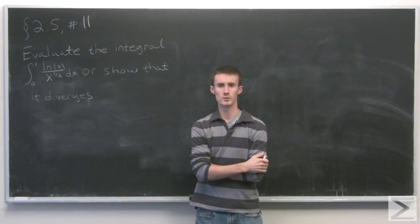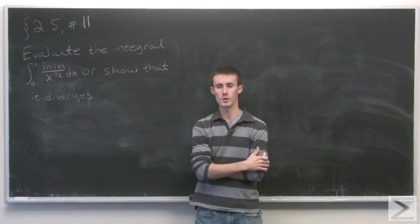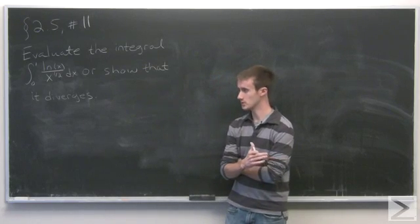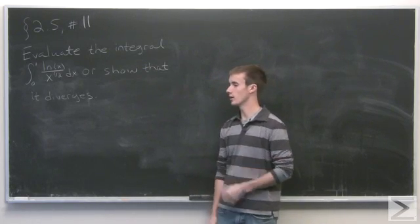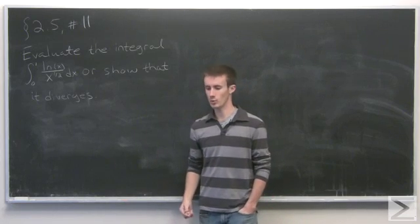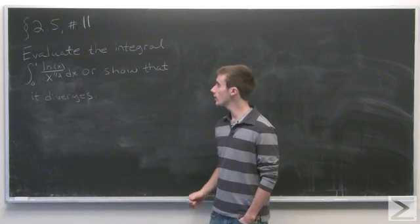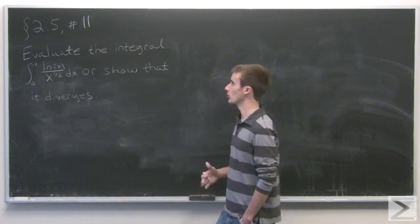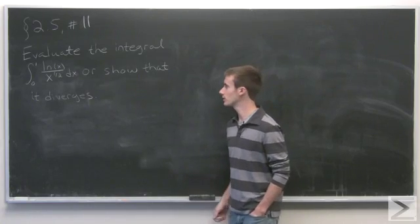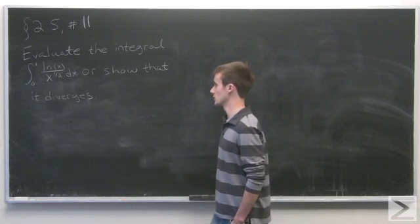In problem number 11 of section 2.5, we evaluate the improper integral from 0 to 1 of natural log of x over x to the one half — or evaluate it, or show that it diverges.